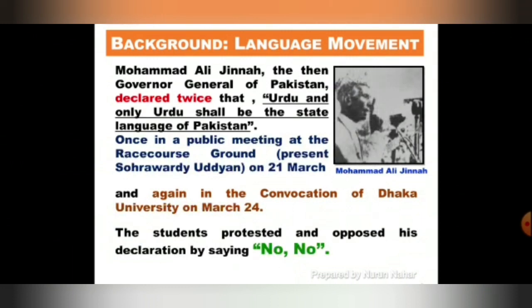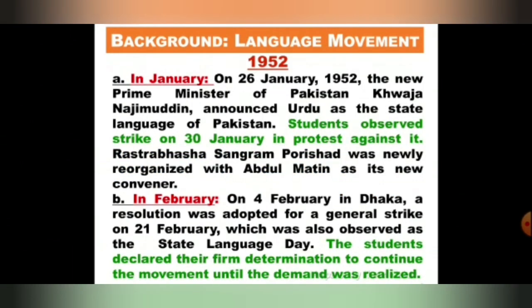At that time, Muhammad Ali Jinnah was the Governor General of Pakistan, and he declared twice in two different places that Urdu and only Urdu shall be the state language of Pakistan — once in a public meeting at Race Course Ground on 21st March, and a second time at the convocation of Dhaka University on March 24. But he was strictly protested by the students. In January 1952, students observed a strike on 30th January in protest against this. On 4th February, students declared their firm determination to continue the movement until the demand was realized.